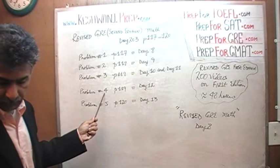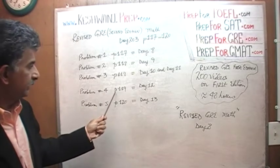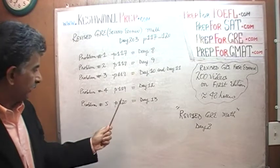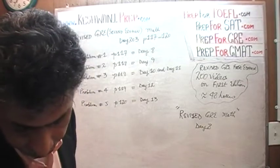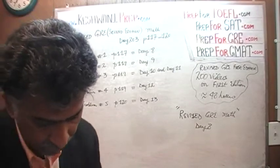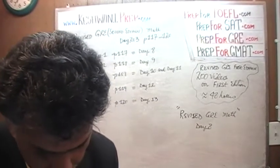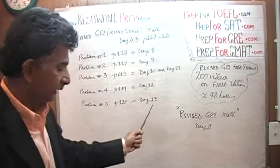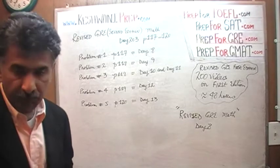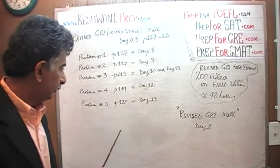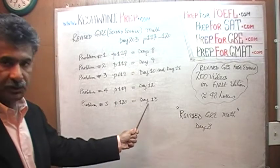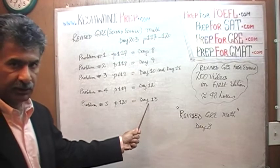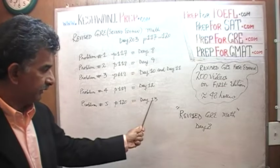Problem number four on the following page, at the bottom of page 119, was covered on day number 12. And finally, problem number five on the next page — which deals with the jar containing jelly beans — is something we did on day number 13. Just type in Revised GRE math, day 13.